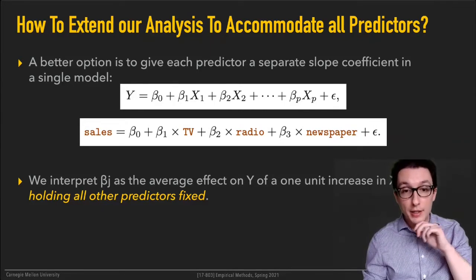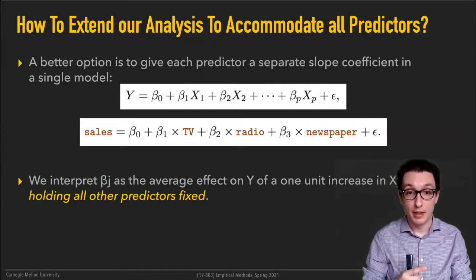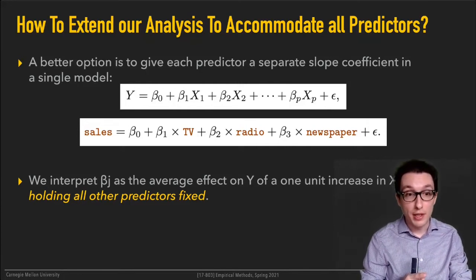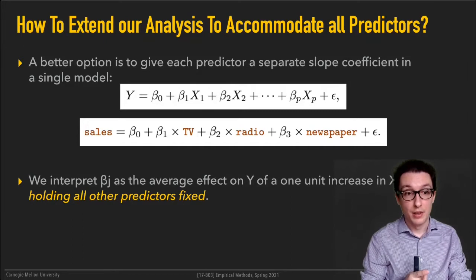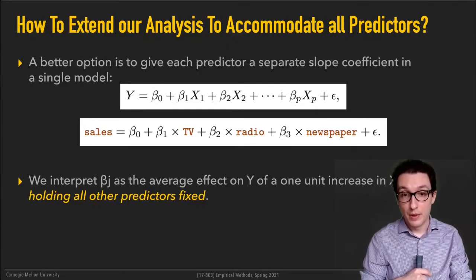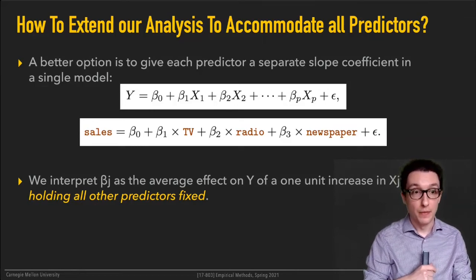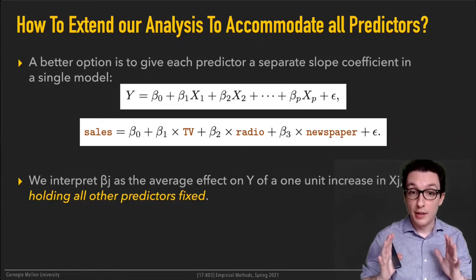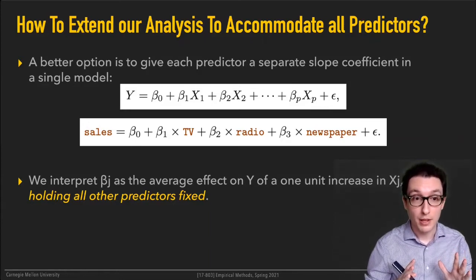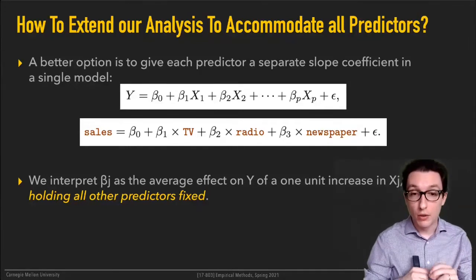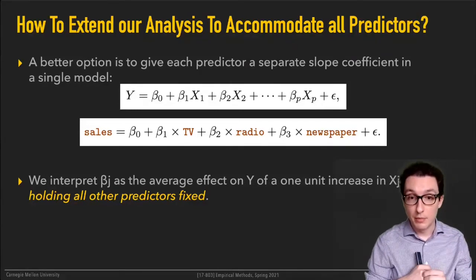Now here's the second million dollar idea. The way you interpret these coefficients — these betas — is as the average effect on the outcome, the Y variable, for every one unit increase in that particular variable, while holding all of the other ones fixed. That's the second million dollar idea. The interpretation of these coefficients is: how much does the outcome change when you're changing that particular X by one unit while holding everything else fixed.